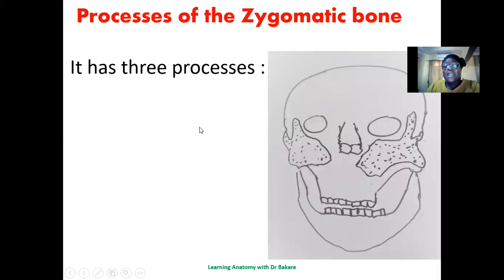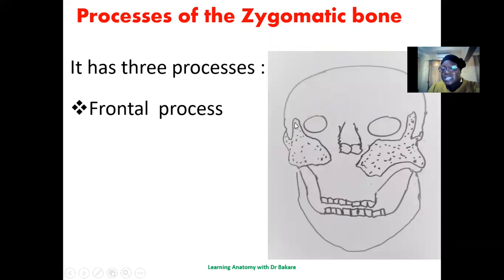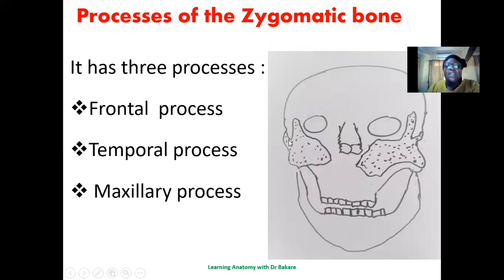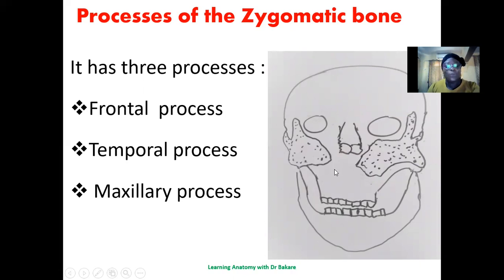The zygomatic bone has three processes. The first is the frontal process, where it connects with the frontal bone by the side of the orbit. Then the temporal process, where it connects with the temporal bone through the formation of the zygomatic arch. Then the maxillary process, where it connects with the maxilla in the central face region.